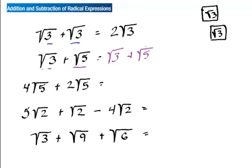When I look at the next one, I have four square roots of five plus two square roots of five, which gives a total of six square roots of five. The next one extends this: I have five square roots of two plus another square root of two, which gives me six, and then take away four of them, leaving two square roots of two.